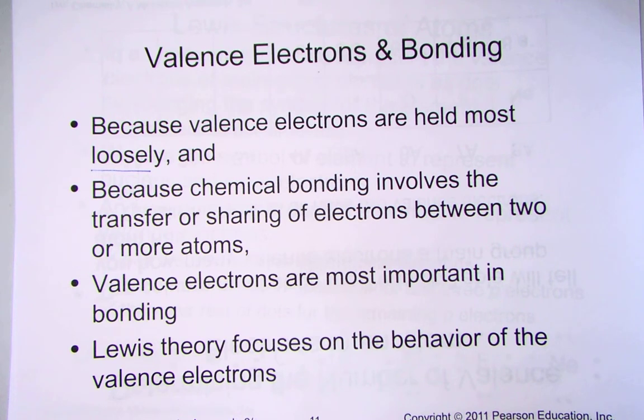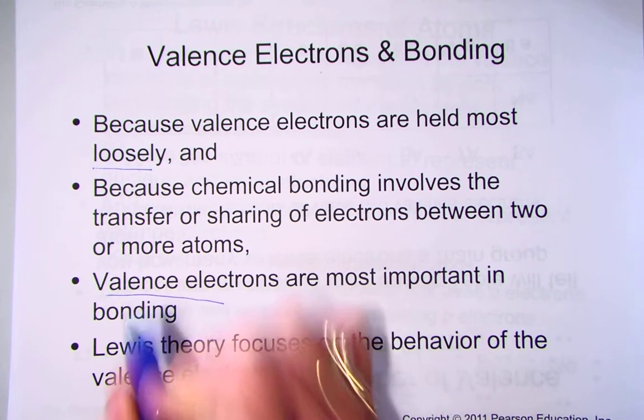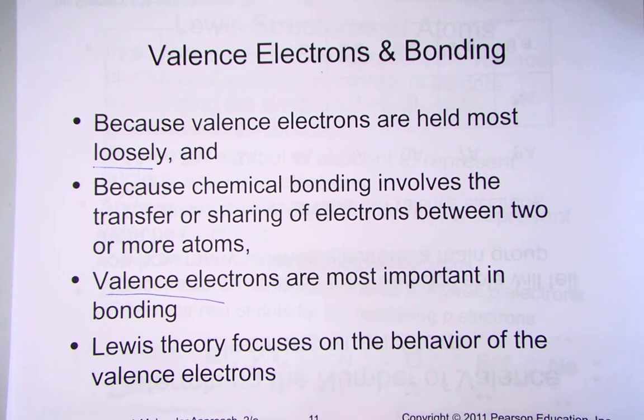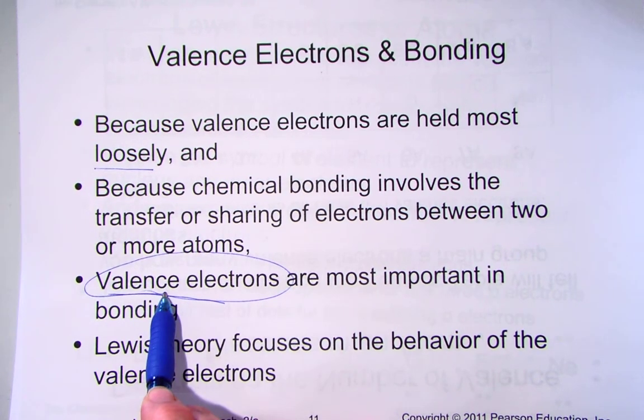Because chemical bonding involves the transfer or sharing of electrons between two or more atoms, it really is just this outermost shell that's of interest to the chemist. Therefore, when we start predicting how atoms bond together and start predicting the properties of molecules that we form, we focus on the valence electrons only.